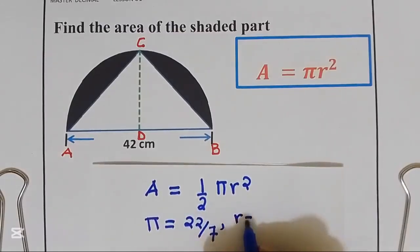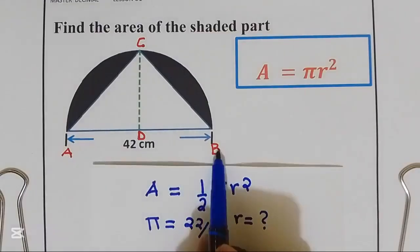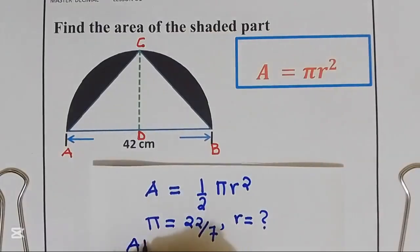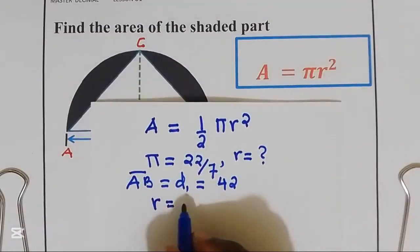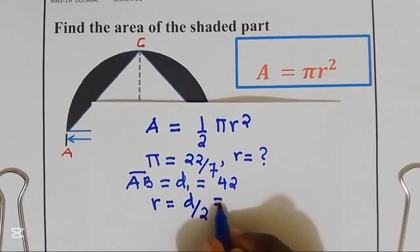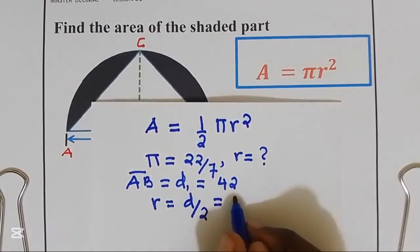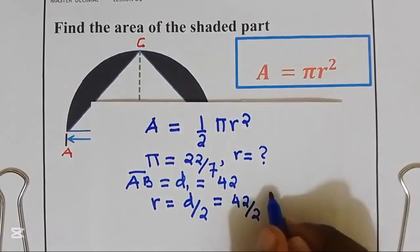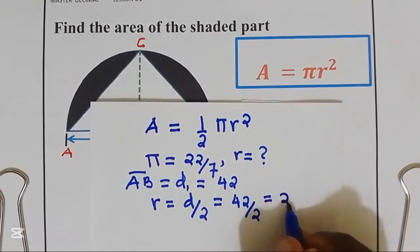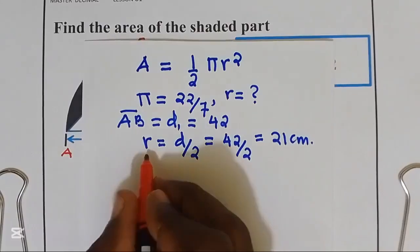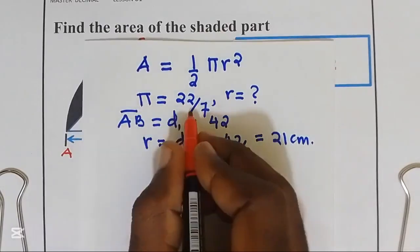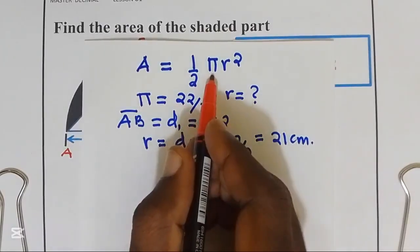But we need to find what R is equal to. When we check our figure, distance AB is a diameter, which is equal to 42. We know radius is equal to diameter divided by 2, that is 42 divided by 2, which gives us a radius of 21 centimeters. Now we can go ahead substituting R equal to 21 and π equal to 22 over 7 into our formula to get the area of a semicircle.